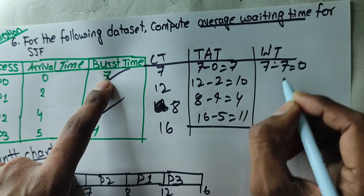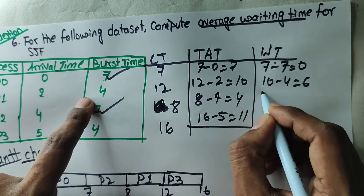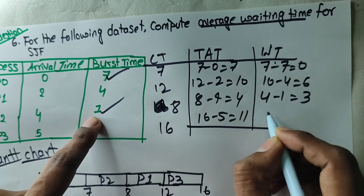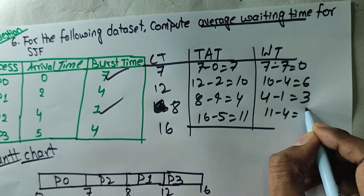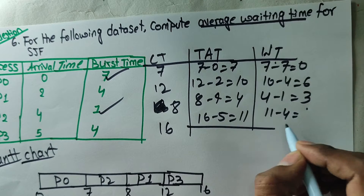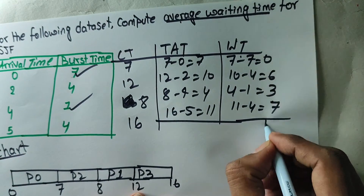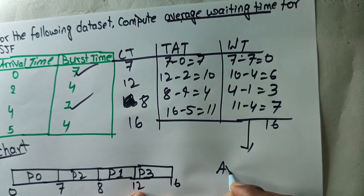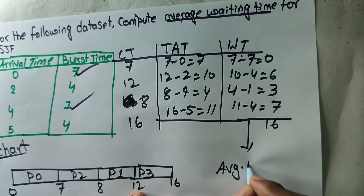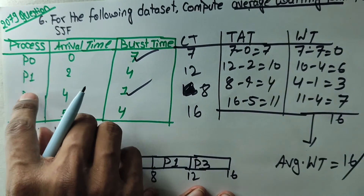t8 is equal to 7 minus 7, which is equal to 0. 10 minus 1 is equal to 6. 4 minus 1 is equal to 3. 4 is equal to 4, which is equal to 7. This is equal to 7, which is equal to 1. This is equal to average waiting time, which is equal to 4.